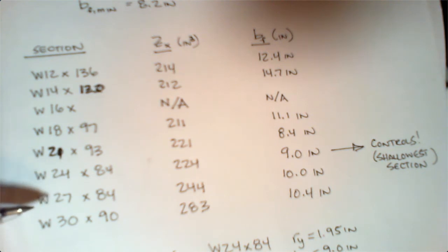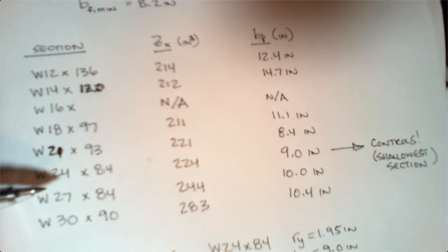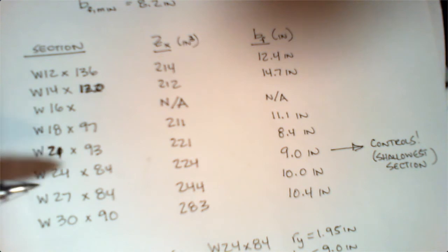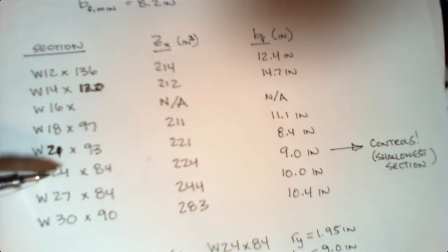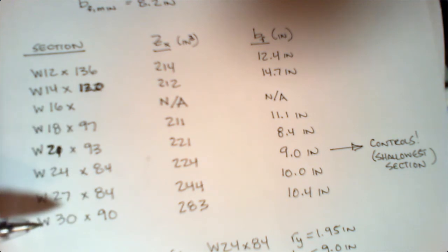Basically, I'm down to one of these two guys being my controlling factor. If I had a deflection concern, I would instantly take the larger of the two. If I have a spacing concern, or often I choose the shallowest shape. What this does is for a multi-story building, it basically saves me three inches of depth.